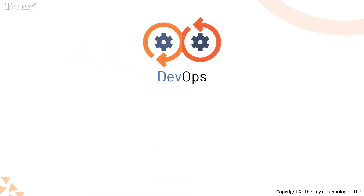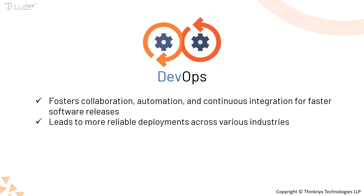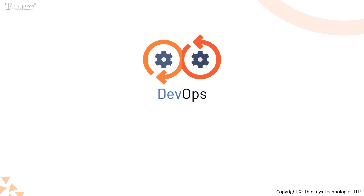DevOps emphasizes a culture of collaboration, automation, continuous integration, and continuous delivery. These practices help organizations achieve quicker software releases and more dependable deployments. The principles of DevOps can be applied to any organization, whether it's a tech industry or another industry aiming to streamline its development processes.